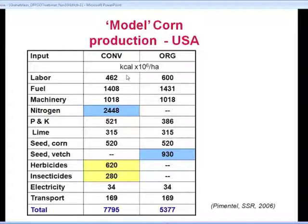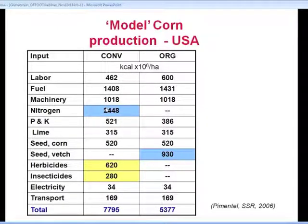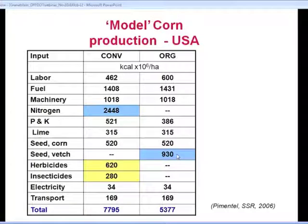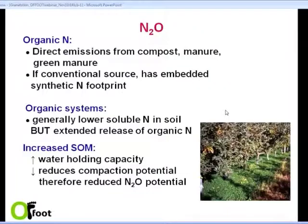Another CO2 impact is the energy situation. Looking at energy budgets of conventional versus organic corn production in the USA, the biggest difference is almost always that conventional has a very large energy footprint for nitrogen fertilizer that organic does not have. In this example, an energy credit is included for growing the vetch as the green manure nitrogen source, but typically nitrogen fertilizer is the big input that makes conventional systems more energy-intensive with its associated CO2 footprint.